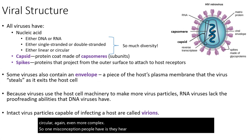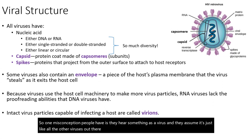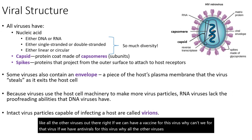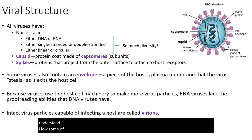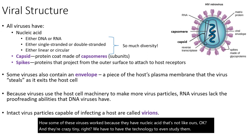One misconception people have is they hear something is a virus and assume it's just like all the other viruses. If we can have a vaccine for one virus, why can't we for another? If we have antivirals for one, why not all others? Because in just one component — the nucleic acid — there's so much diversity. It took a long time to understand how some of these viruses worked, and they're crazy tiny, so we had to have the technology to even study them.